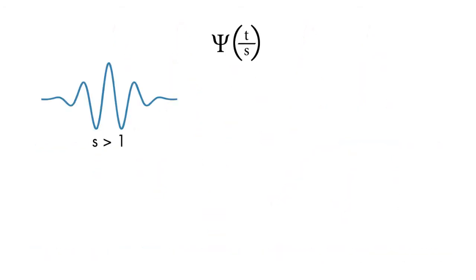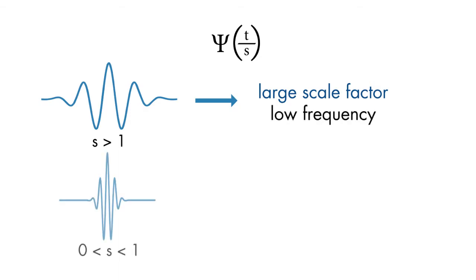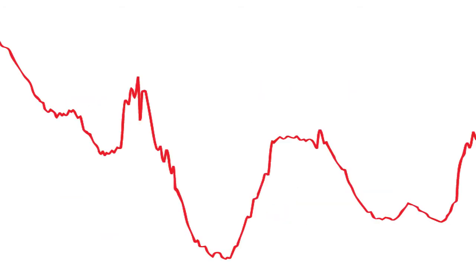A larger scale factor results in a stretched wavelet, which corresponds to a lower frequency. A smaller scale factor results in a shrunken wavelet, which corresponds to a high frequency. A stretched wavelet helps in capturing the slowly varying changes in a signal, while a compressed wavelet helps in capturing the abrupt changes.